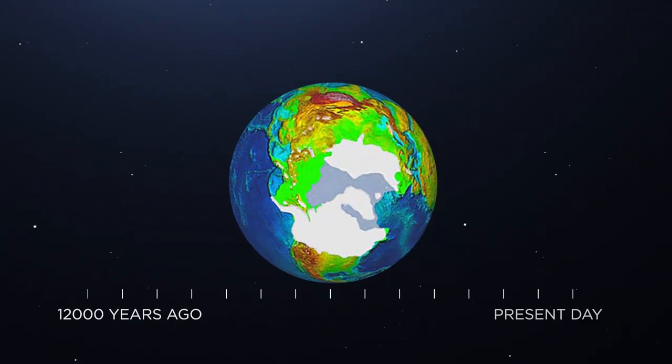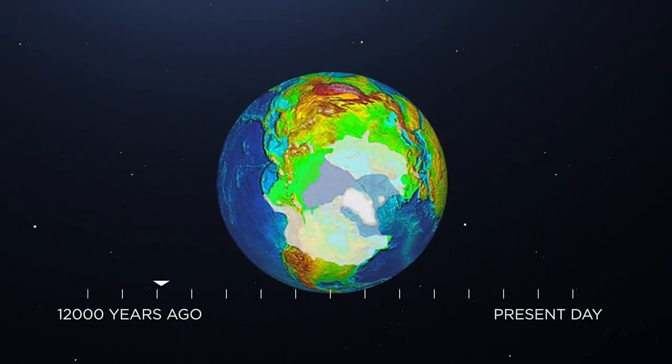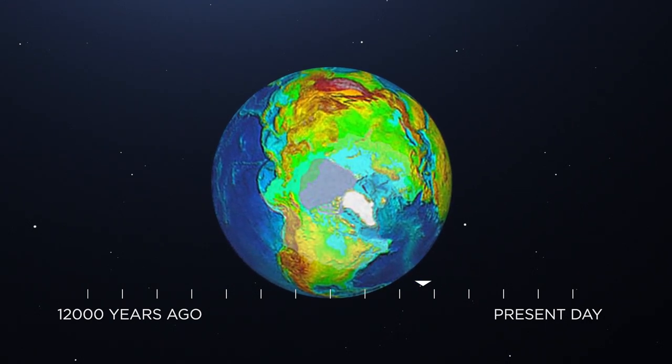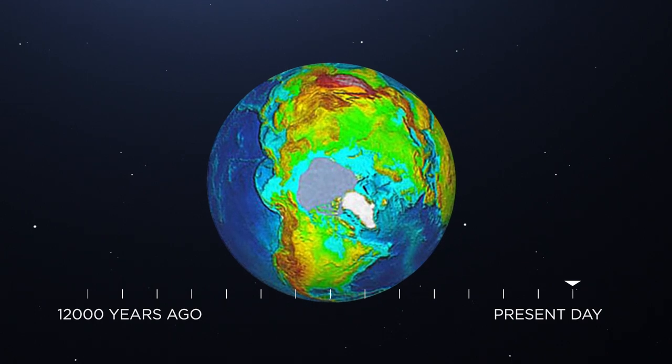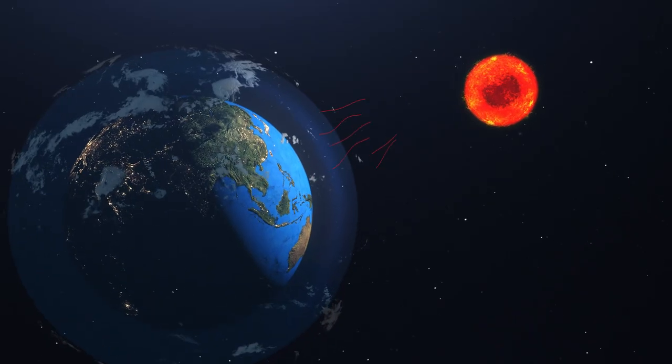Since the end of the last ice age some 12,000 years ago, our climate has been fairly stable, although it has often been affected by small changes in the amount of solar radiation reaching the Earth's surface.